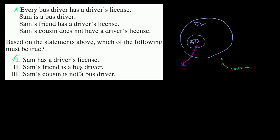Sam's friend is a bus driver — all they've told us about Sam's friend is that he has a driver's license. He might be out here among people with driver's licenses who aren't bus drivers, or he might be a bus driver who also has a driver's license. But we don't know for sure whether he must be a bus driver. He could just have a driver's license — I have a driver's license and I'm not a bus driver. So you can't say that this one must be true.